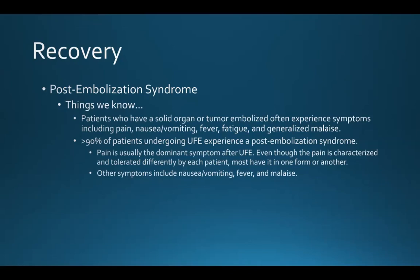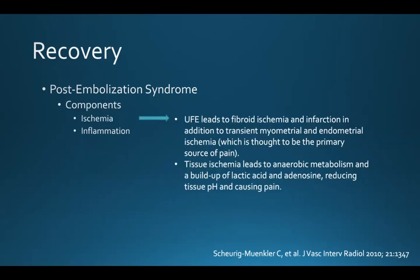Pain is usually the dominant symptom that they experience, and even though the pain is characterized and tolerated differently by each patient, most have pain in one form or another, along with nausea and vomiting, fever, and malaise. When UFE is performed, it leads to both ischemia and inflammation — fibroid ischemia and infarction, in addition to transient myometrial and endometrial ischemia, which is thought to be the primary source of the pain. Tissue ischemia leads to anaerobic metabolism and a buildup of lactic acid and adenosine, which reduces the tissue pH and causes pain.